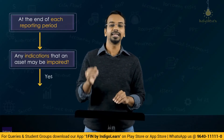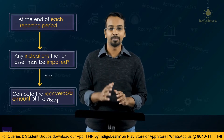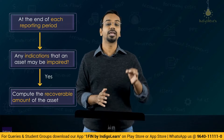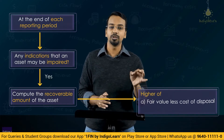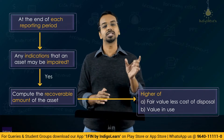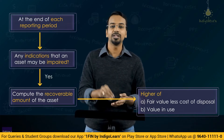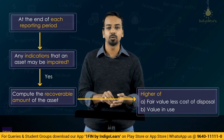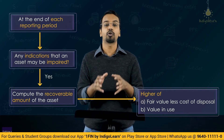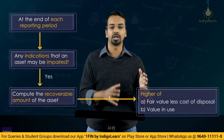If there are indicators of impairment, then the entity is required to estimate the recoverable amount. Recoverable amount is the higher of value in use and fair value less cost of disposal. Value in use is the present value of cash flows that the entity is expected to generate from use of the asset and ultimate disposal.